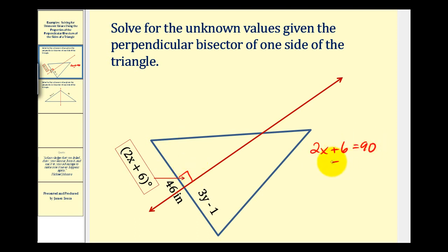We'll go ahead and subtract 6 on both sides. This would be 0. 90 minus 6 would be 84. Divide both sides by 2. So we know x has to equal 41.